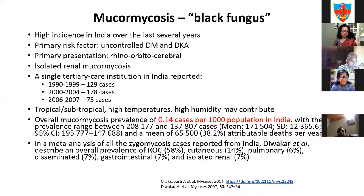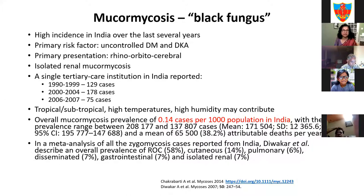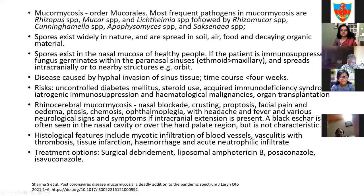A meta-analysis described overall prevalence of rhinoorbital cerebral mucormycosis at about 58%—the most common form. Cutaneous is about 14%, pulmonary about 6%. India is one of the few places where isolated renal mucormycosis makes up some cases. This belongs to the order Mucorales, and the spores exist widely in nature—spread in soil, air, food, and decaying organic material. Outbreaks have been related to contaminated bandages and patient environment contamination with soil. Spores can exist as commensals in the nares of healthy people.